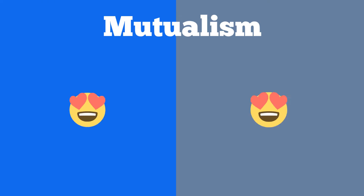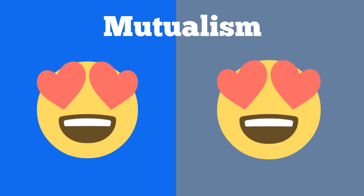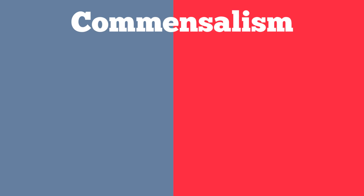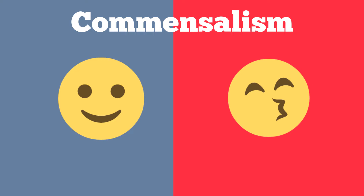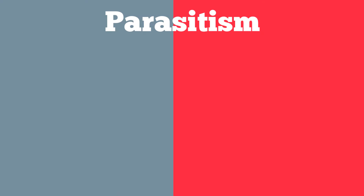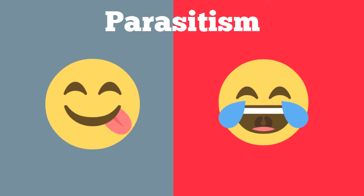They are mutualism, in which both organisms benefit; commensalism, in which one organism benefits and the other is neither helped nor harmed; and parasitism, in which one benefits and the other is harmed, or maybe even killed.